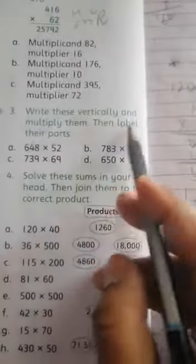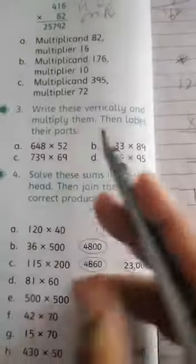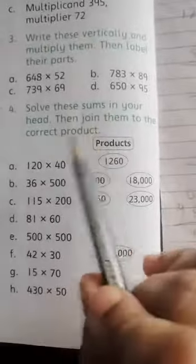So very simple. Next questions are on reinforcement. Write this vertically, multiply them and label - that is your multiplicand, multiplier, and the answer will be product. This is also your homework on this whole page and reinforcement.